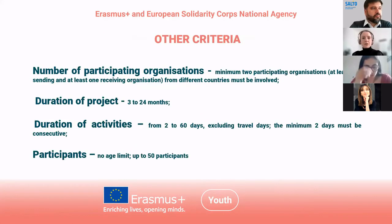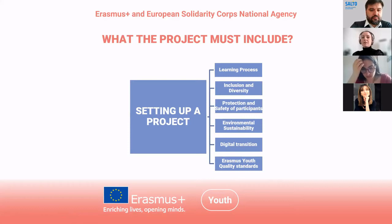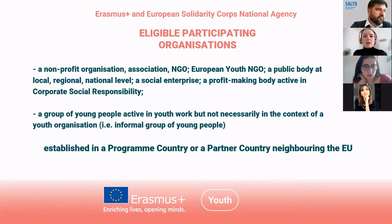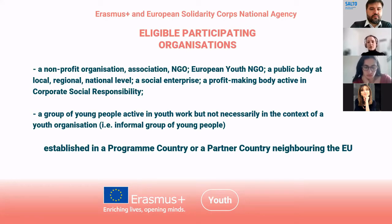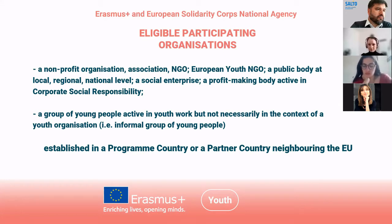So that was what projects must include. Remember that, and when you write your application form, please list all of these things. Another thing is the eligible participating organizations — same as before. We have a non-profit organization, association, NGOs, European youth NGOs, a public body at local, regional, or national level, a social enterprise, a profit-making body active in corporate social responsibility, and a group of young people active in youth work but not necessarily in the context of a youth organization. In the program guide you have an explanation about the group of young people.